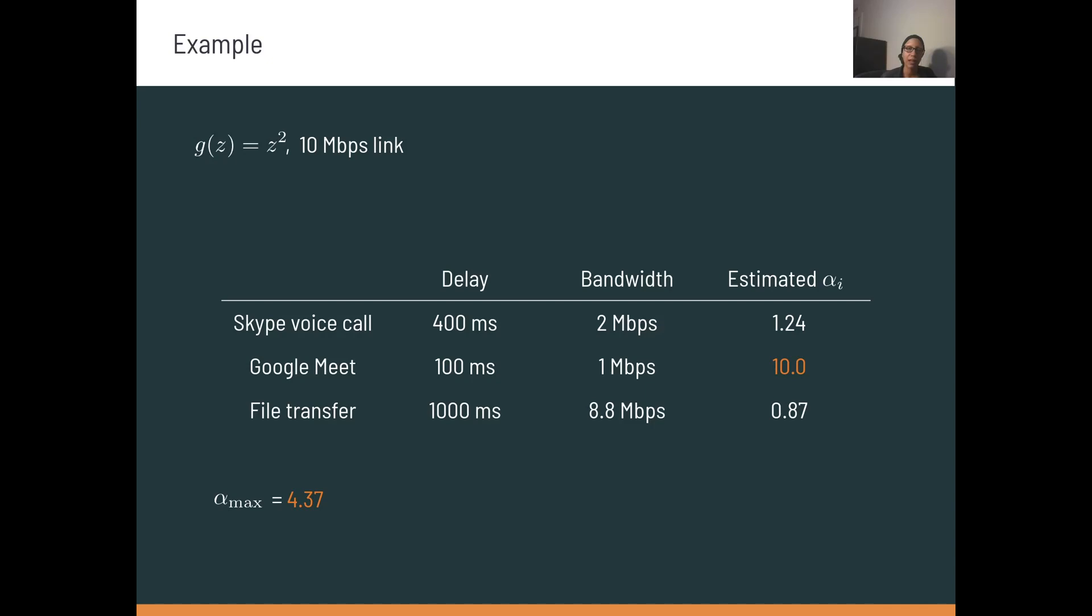If we push these values through our safety condition, we find that that upper bound on alpha is 4.37. There are details in the specifics of the calculation in our paper, but one takeaway here is that Google Meet, in our example, would not be able to minimally coexist with Skype and the file transfer on this 10 megabit per second link. So its equilibrium preference would be to send no packets.